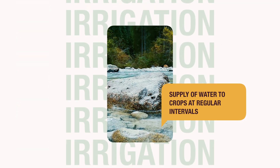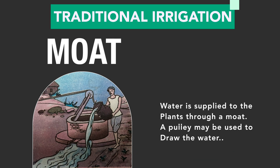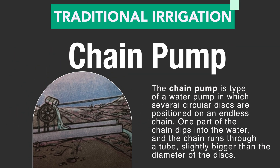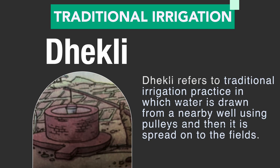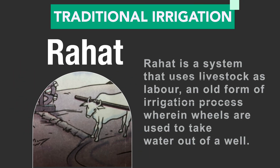The supply of water to crops at regular intervals is called irrigation. The time and frequency of irrigation varies from crop to crop, soil to soil and season to season. In traditional methods, human or cattle labor is used to bring water from wells, lakes and canals. In the moat method, water is supplied to plants via a moat dug around them. The chain pump method uses circular discs on a chain to supply water. The Dhekli method draws water from a well by hand or pulley, and the Rahat method uses cattle force to draw water via a wheel.